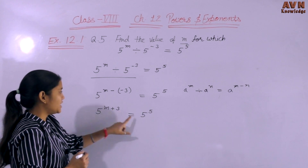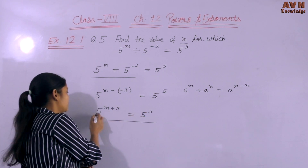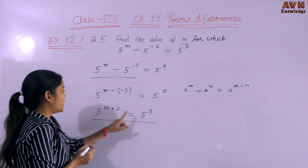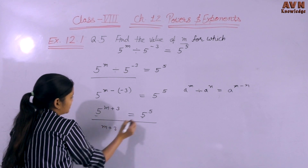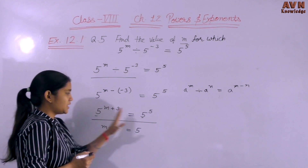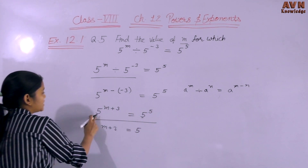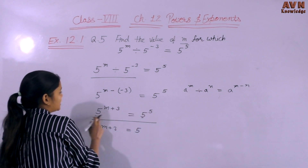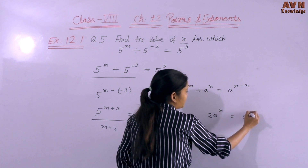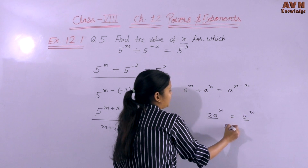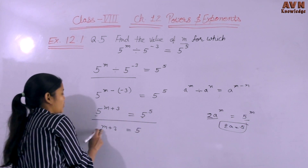So 5 raised to the power M plus 3 equals 5 raised to the power 5. Now we compare both sides — on the LHS the base is 5 and on the RHS the base is also 5. When both sides have the same base, the exponents become equal. Similarly, if exponents are the same, the bases are equal. So since the base is the same here, the exponents are equal: M plus 3 equals 5.